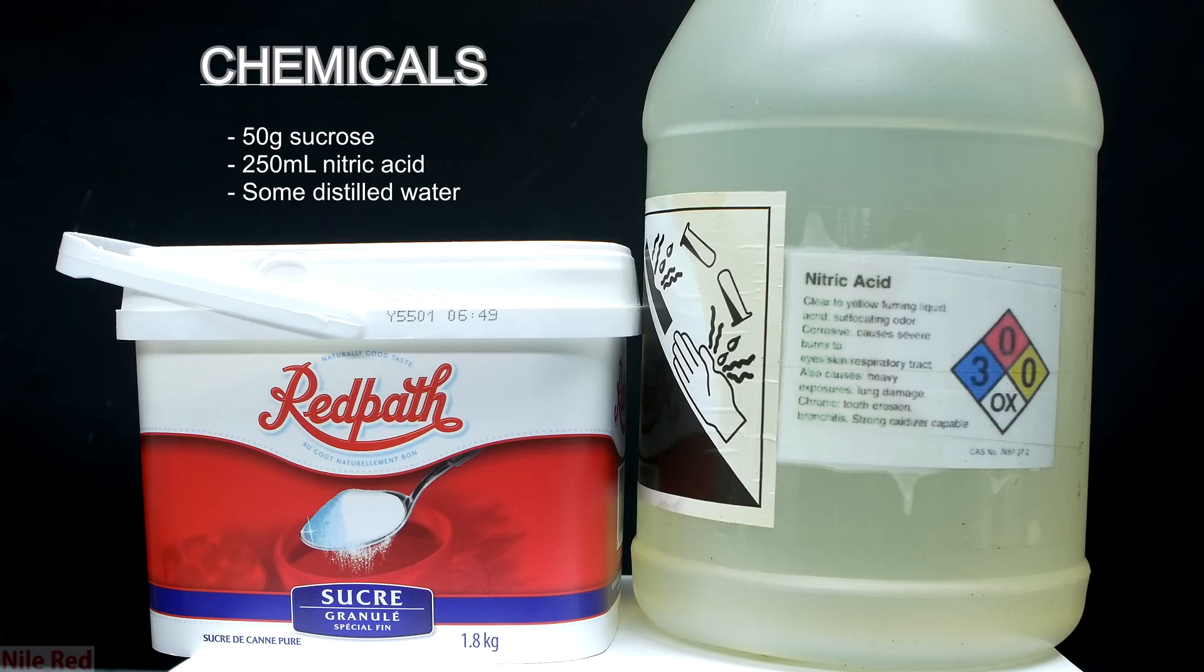For this preparation, I used about 50 grams of sucrose, which is effectively just table sugar, and about 250 milliliters of concentrated nitric acid. The method that I'm using here is just a scaled up version of the one that's used by Chemplayer, and I'll provide a link to their video in the description.